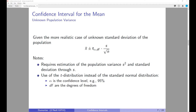The term 'Student distribution' comes from the fact that the person who invented it — William Gossett — was working for the Guinness brewery in Ireland. His employer didn't allow him to publish under his real name, so he chose the pseudonym 'Student,' hence Student distribution.